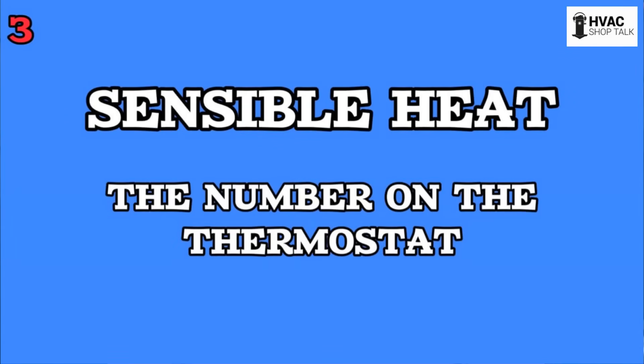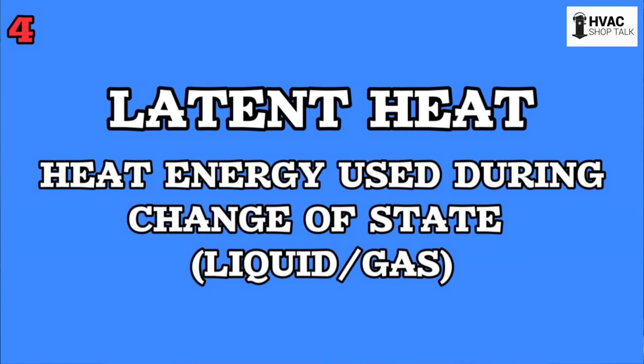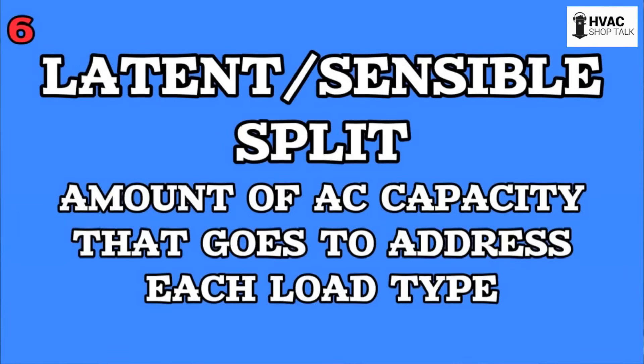The more humid your air is, the more capacity it needs in the latent category. So think about it: sensible is the number on the thermostat, and latent — you can think of it as the relative humidity number if your thermostat has that. You combine those two to get total heat. In certain environments with less humidity, you don't require as much latent capacity, and the temperature split swings based on how much capacity you need between latent and sensible load types.